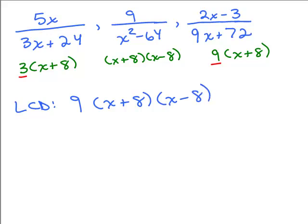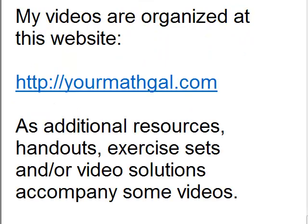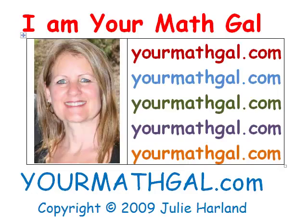So the least common denominator is 9 times x plus 8 times x minus 8, since neither x plus 8 nor x minus 8 has an exponent. You can leave your answer like that, or multiply it out as 9 times x squared minus 64. There are different ways of writing the least common multiple. So these are some problems covering the least common multiple of the denominators for three algebraic fractions.